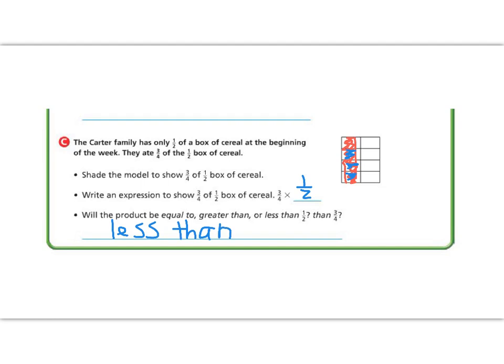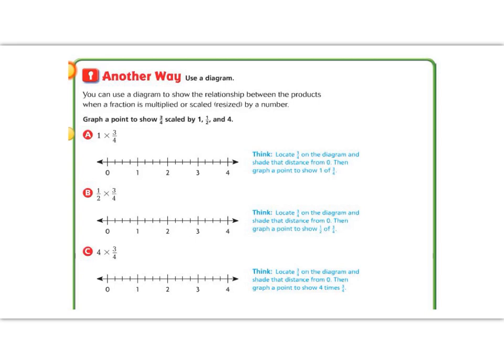Great job so far, fifth graders. Let's try this another way. In the 'another way' section, we're going to show this same concept, but not with a model — with a number line. We're going to show on a diagram the relationship between the products when a fraction is multiplied or resized by a number. So we're going to graph 1 times 3 fourths. We can show this on a number line of fourths — so here's 3 fourths on the number line: one fourth, two fourths, three fourths. Four fourths would be a whole, but we have 3 fourths, so it would be less than 1. Let's write less than by it.